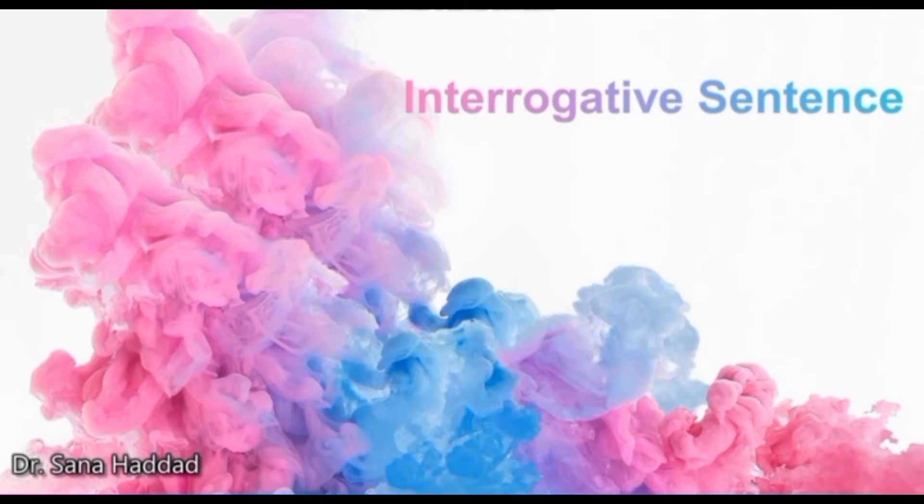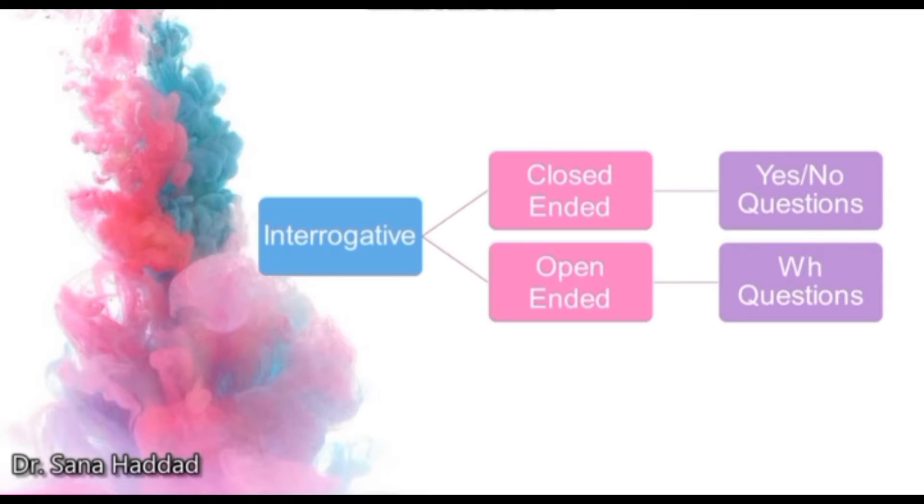Interrogative sentence. An interrogative sentence asks a question. There are two types of interrogative sentences as well. The first type is closed-ended, which is yes-no questions, and the second type is open-ended, which is wh-questions.